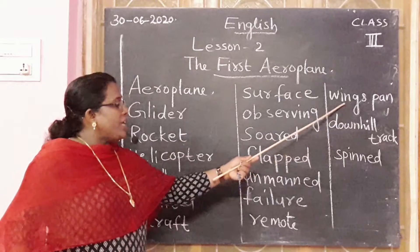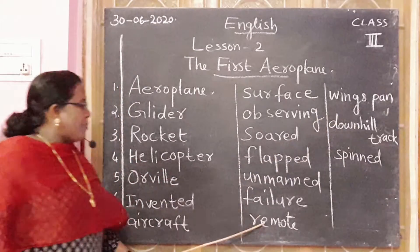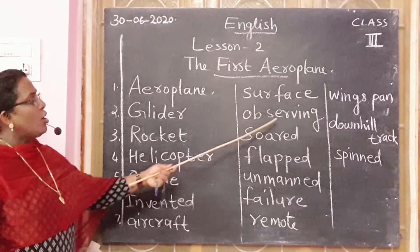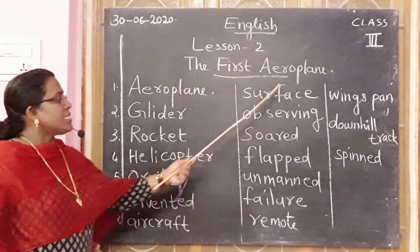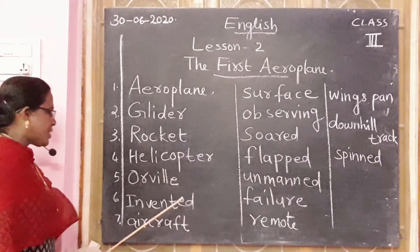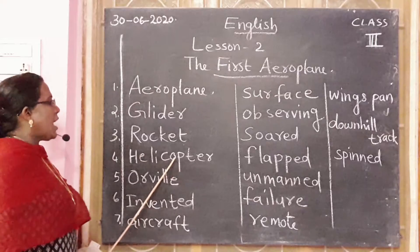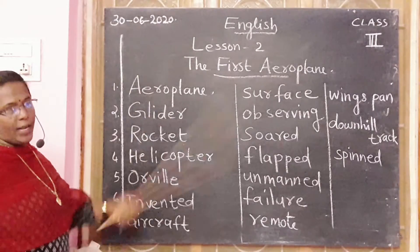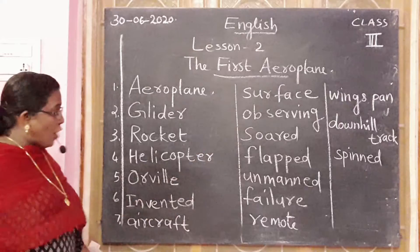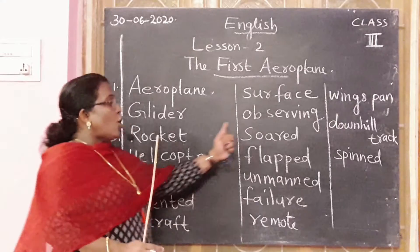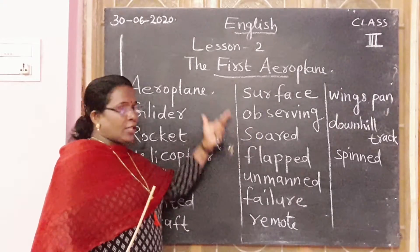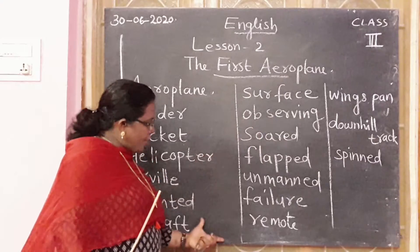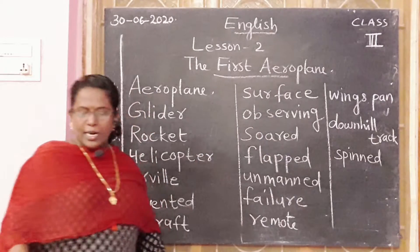Downhill track, wingspan, remote, failure, unmanned, flat, soared, observing, surface, aircraft, invented, helicopter, rocket, glider, aeroplane. Write down children, write down only. Don't write the side place, otherwise one page will get filled. Write it. Take fresh place and write. Write down.